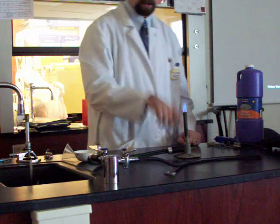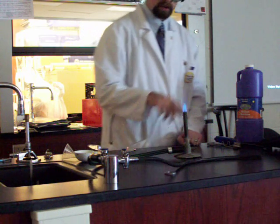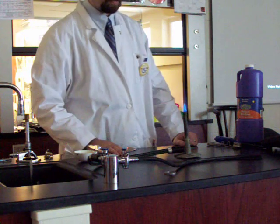A good Bunsen burner flame has two blue colors, an inner blue cone that's lighter in color and the outer blue cone that's sometimes a little purplish in color.